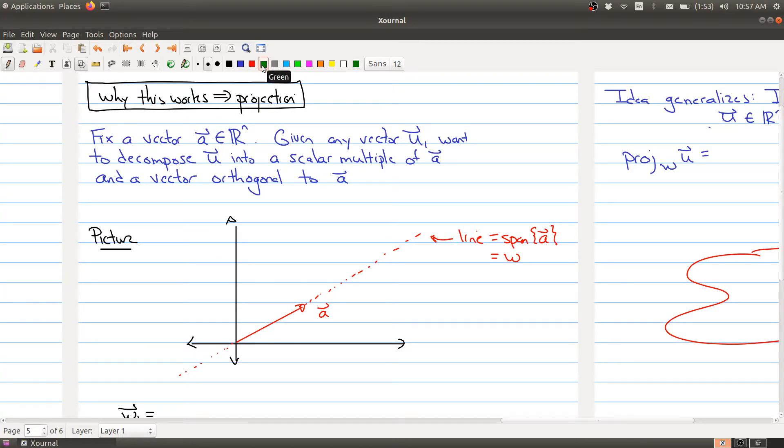So w is the span once you've fixed your vector a. Now somebody comes along and gives you a vector u. So here we go, here's my vector u. Now what we want to do is decompose this into a vector that's a scalar multiple of a. To be a scalar multiple of a it has to be somewhere in w, a multiple of a.